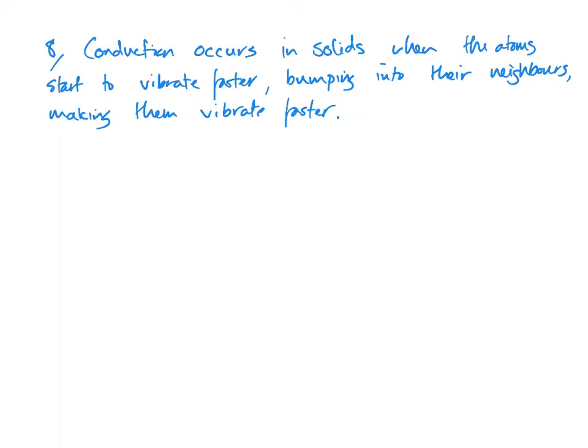So if you take a copper rod, if you heat one end of it with a Bunsen burner, then eventually the heat will transfer along to the other end as well. Materials which are good at this are known as conductors. They're good at transferring heat. Materials which are not good at this are known as insulators.